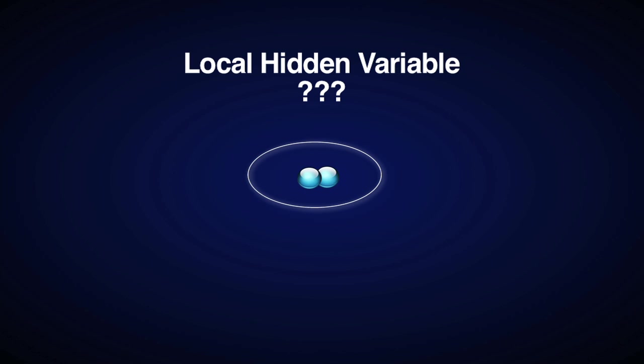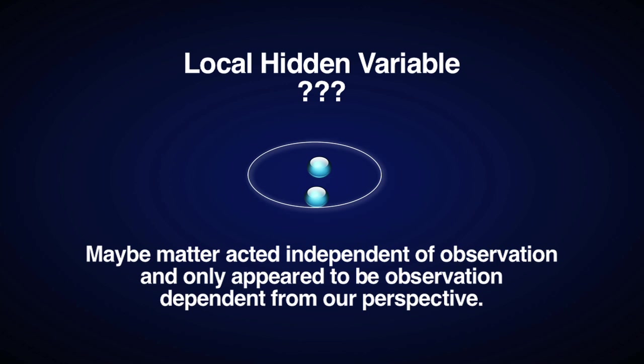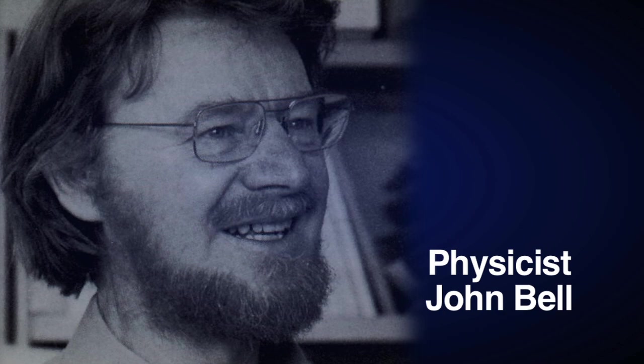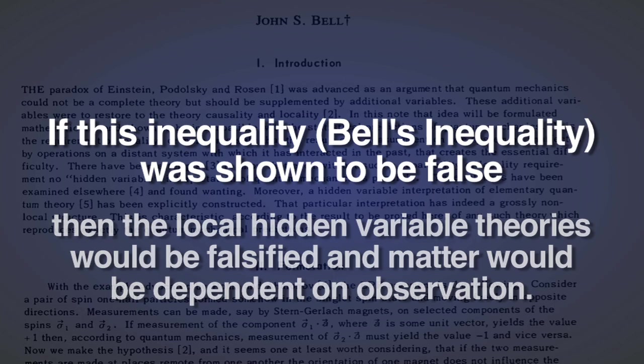However, in the 1960s, John Bell began to explore this thought experiment and proposed an inequality. If this inequality was shown to be false, then the local hidden variable theories would be falsified and matter would be dependent on observation. This was put to experimental tests in 1982 by Alan Aspect, and the results confirmed Bell's predictions. Bell's inequality was violated. This confirmed what quantum mechanics was telling us.